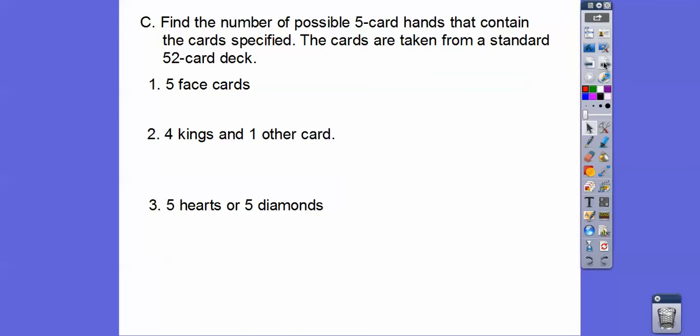There's 12 face cards. There's four jacks, four queens, and four kings. So that one's going to be 12C5. We're going to put this factorial over this factorial and then subtract those two factorial right there. So we get 12 factorial over 5 factorial, 7 factorial.